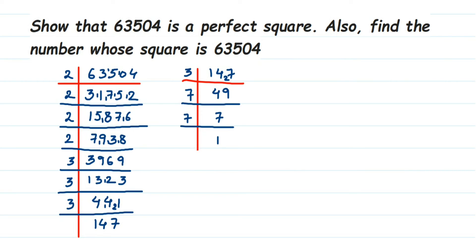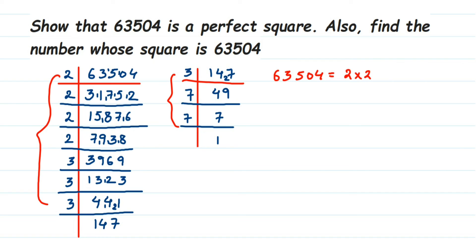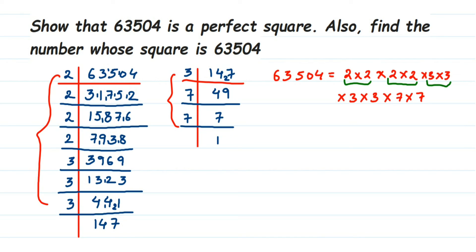Once we get 1, we stop. Now we're going to rewrite all the prime factors. So 63504 equals 2 × 2 × 2 × 2 × 3 × 3 × 3 × 3 × 7 × 7. If the number is a perfect square, all prime factors will be in pairs — sets of two. You can see: this pair, this pair, this pair, this pair, and this pair. All prime factors are paired up, which means the given number is a perfect square.